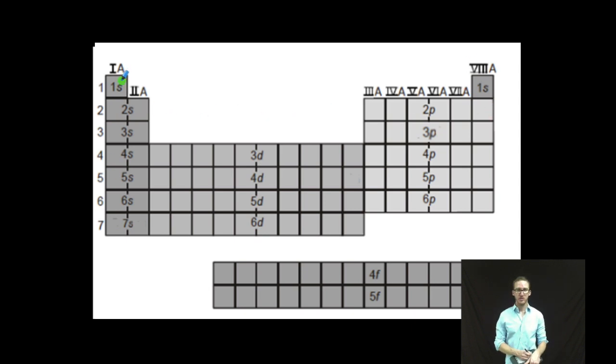In this example, I'm trying to build the electron configuration for hydrogen. So I'm going to start up here and move through the rows until I get to hydrogen. I'm already there.